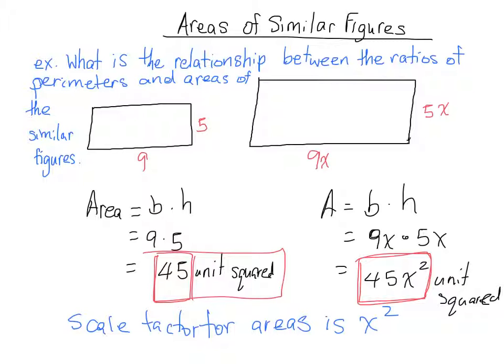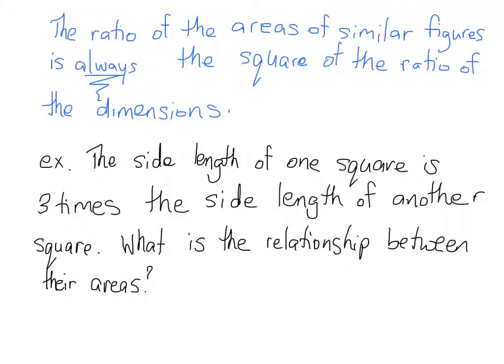Let's see it in action. Here's an example we have. The side length of one square is three times the side length of another square. And then the question is, what is the relationship between their areas?